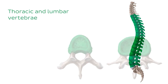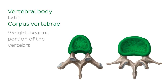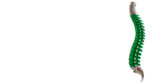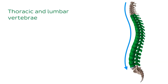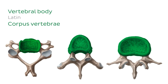We're going to begin with the largest portion of the vertebra, which is the body of the vertebra. Here we have a superior view of both a thoracic vertebra and a lumbar vertebra with their bodies highlighted in green. The vertebral body is the weight-bearing portion of the vertebra, and as we move down the spine, the weight supported by these bodies increases, therefore their size also increases. The thoracic vertebra body is roughly heart-shaped and medium-sized.